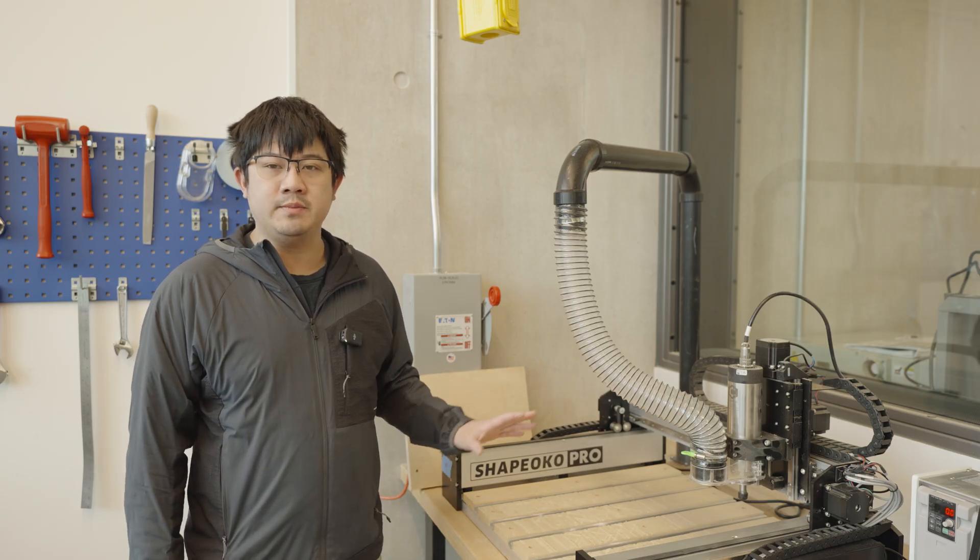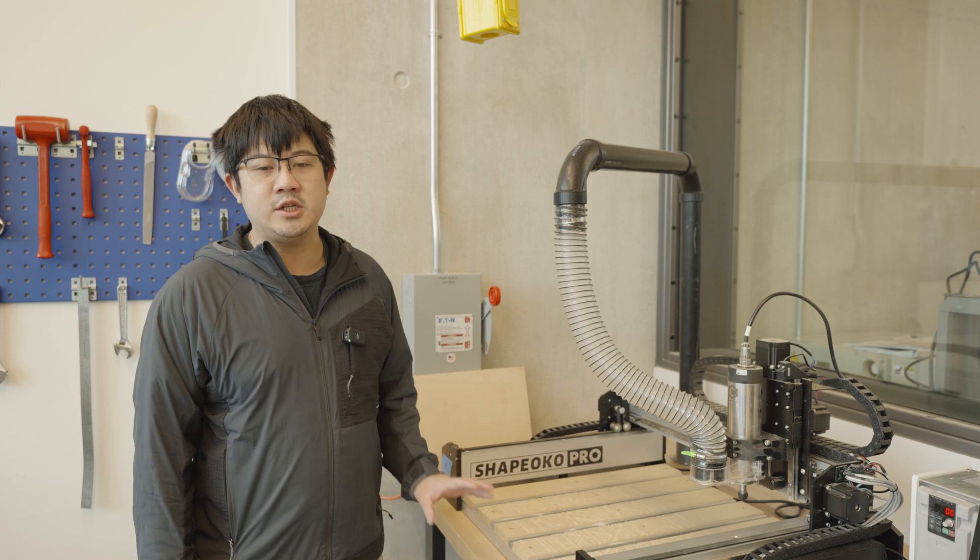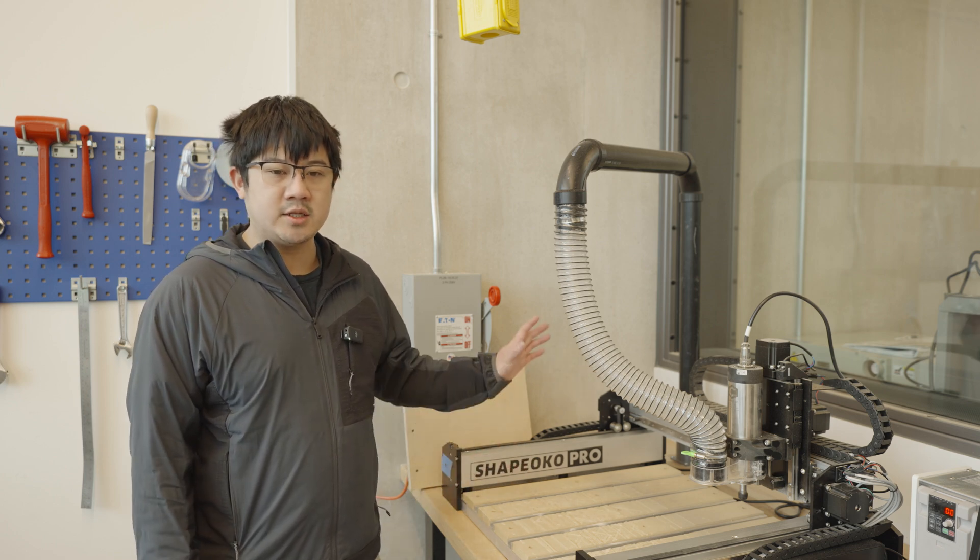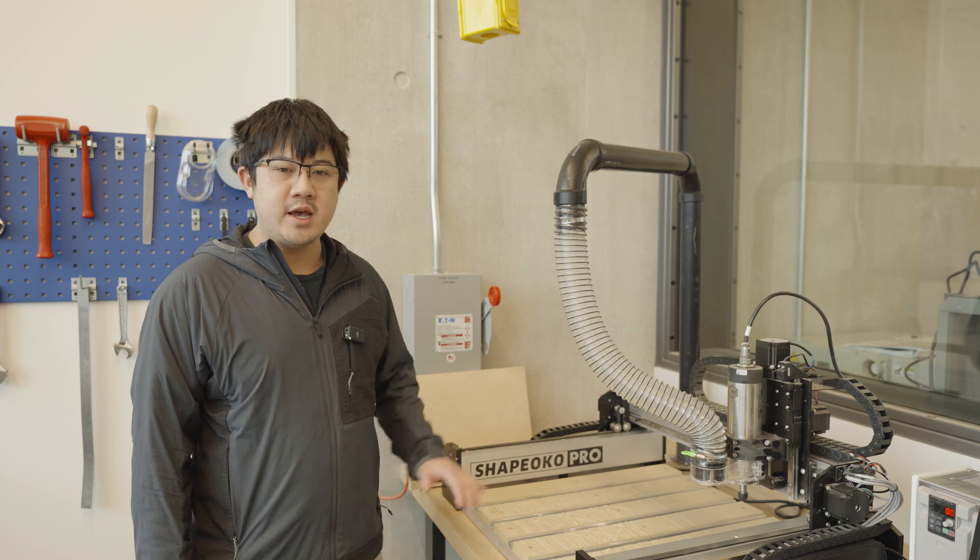So first off, we're going to do a quick overview of the machine. The Shapeoko is a CNC router, which means that it's a three-axis CNC mill. It has an X-axis, a Y-axis, and a Z-axis.